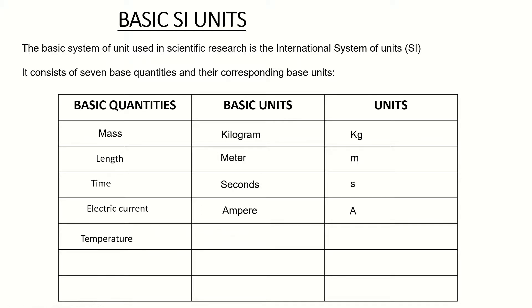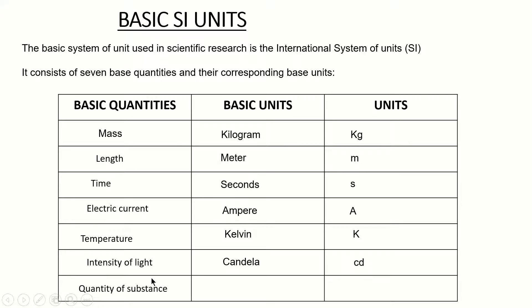The next basic quantity is temperature, and the next is intensity of light — the symbol is candela and the unit is cd. We also have the quantity of a substance, whose unit is mole, with symbol mol. These are the basic quantities and their basic units, also called fundamental units because they are independent of all other quantities.